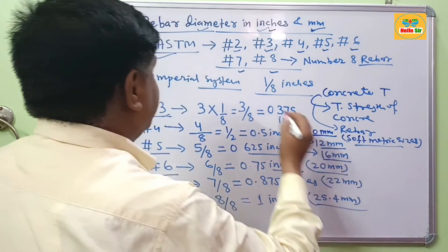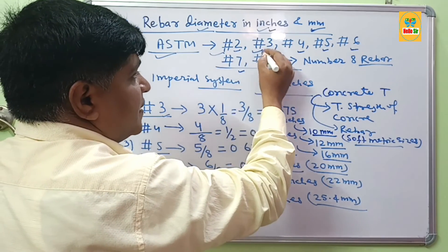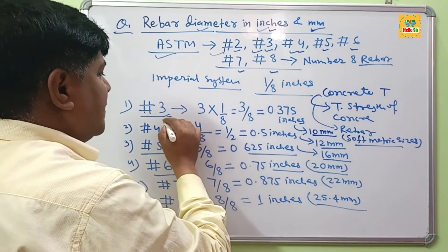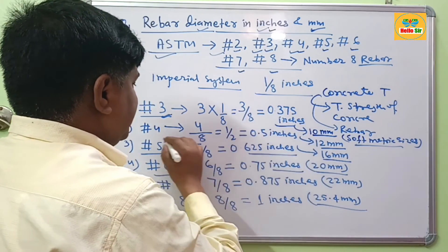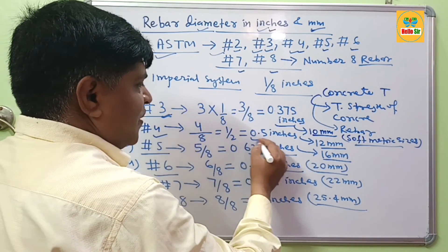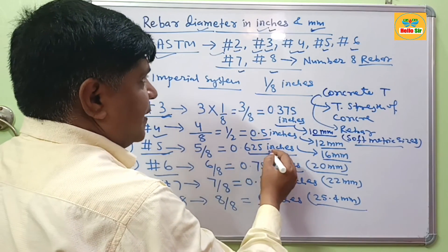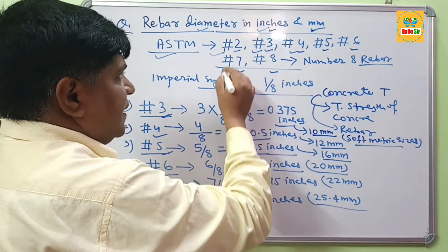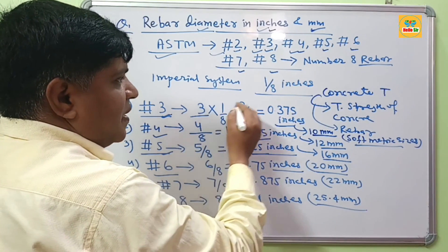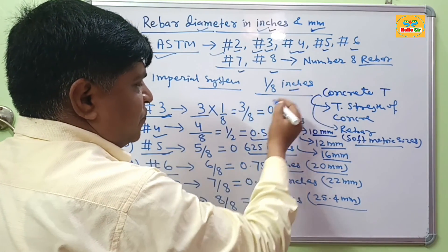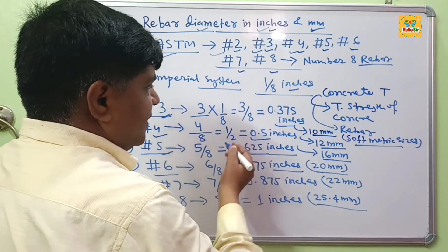To summarize: the diameter of number 3 rebar is 0.375 inches, number 4 rebar is 0.5 inches, and number 5 rebar is 0.625 inches. You can multiply any rebar number by 1/8 inch to find the nominal diameter of that rebar in inches.